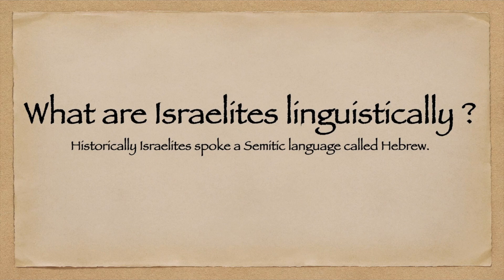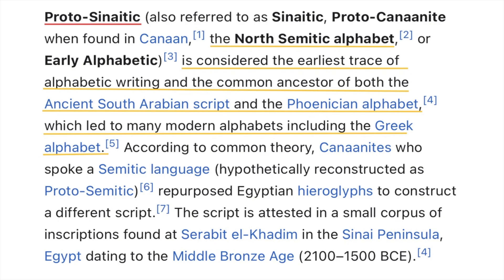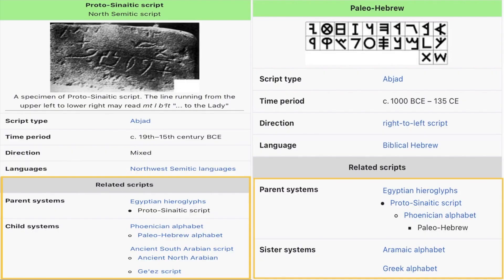Historically, the Israelites spoke a Semitic language called Hebrew. Paleo-Hebrew script is the name used by modern scholars to describe the script found in Canaan, in Canaanite inscriptions from the region of biblical Israel and Judea. Proto-Sinaitic, the North Semitic alphabet, is considered the earliest trace of alphabetic writing and the common ancestor of both the ancient South Arabian script and the Phoenician alphabet, which led to many modern alphabets, including the Greek alphabet.